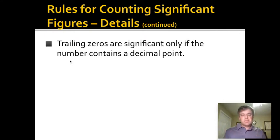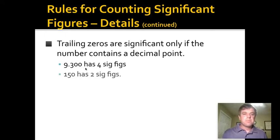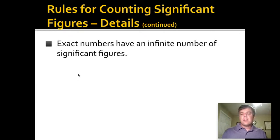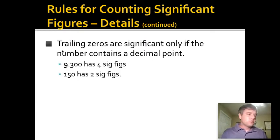Zeros at the end of a number count only if there's a decimal point in the number. So the number 9.300 has four significant figures—the nine, the three, and the two zeros. That signifies that we've made a measurement all the way out to the thousandths place and that is a zero. The number 150 with no decimal places has two significant figures. For instance, you could say ballparking the Civil War ended 150 years ago—that's a ballpark, it didn't exactly end 150 years ago.